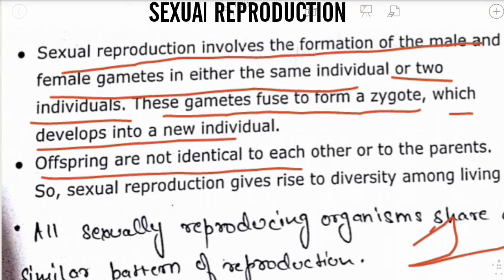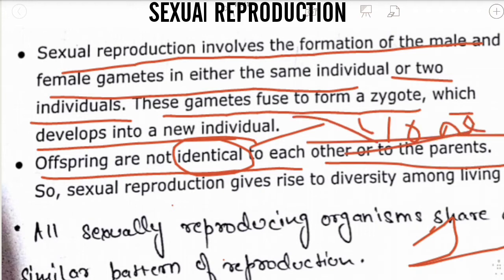In sexual reproduction, offspring are not identical to each other or to their parents. Identical means clone. In asexual reproduction, organisms are genetically and morphologically cloned to each other, but in sexual reproduction this does not take place — they are not cloned to each other or to their parents.